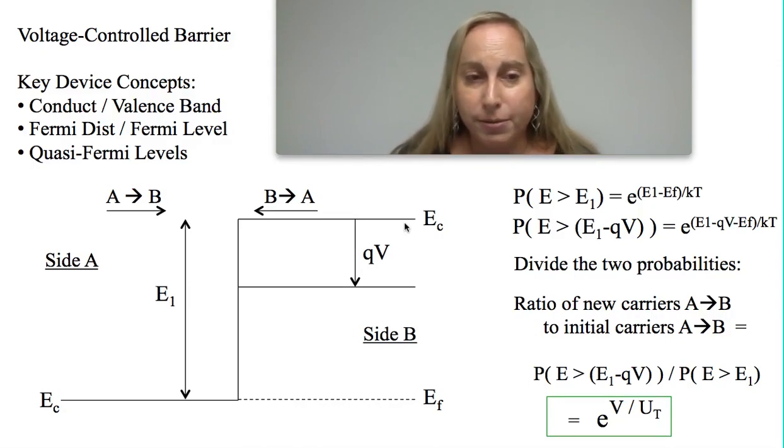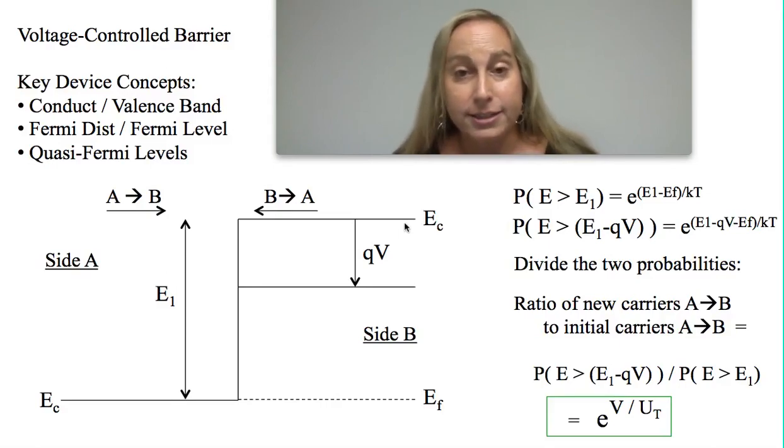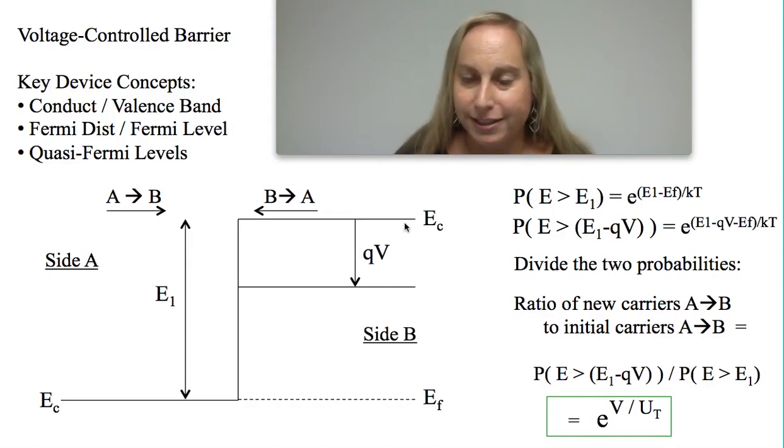A couple things we'll see: the concept of conduction and valence bands, the concepts of Fermi distribution and Fermi level which describes the distribution. The fact that the Fermi distribution exponentially decreases as I go higher in energy, so the probability of finding an electron gets exponentially lower. And then finally, quasi-Fermi levels, because it becomes important to understand when you have a metal contact and you can move a potential, what does it mean?